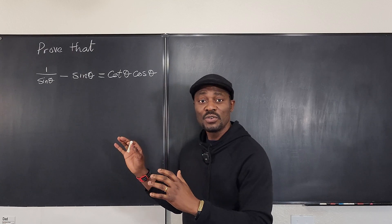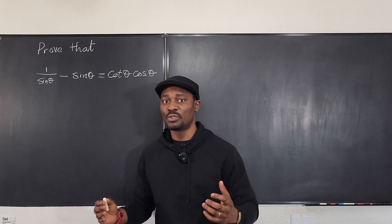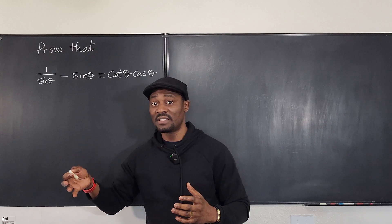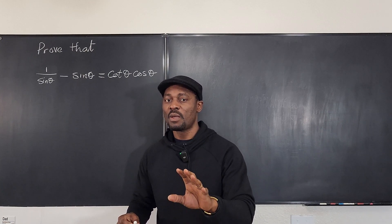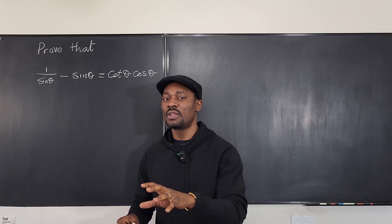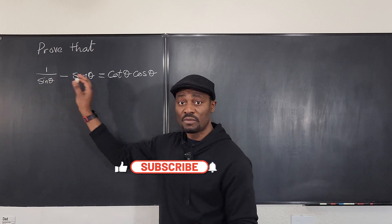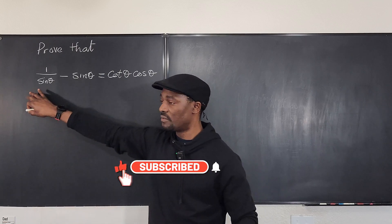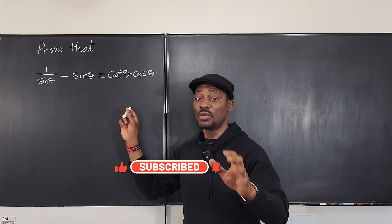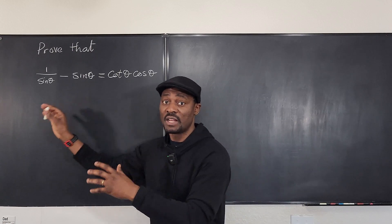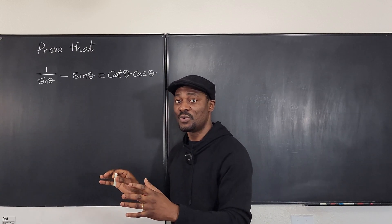Whenever you get a trig identity, or you have trig on both sides and you're told to show that the right-hand side is the same as the left-hand side, just ask yourself: where am I starting from and where am I going? It doesn't matter whether you start from the left or from the right, as long as you can show your final answer is the right-hand side. Or you can start from the right and go to the left — there is no rule which direction you want to start.